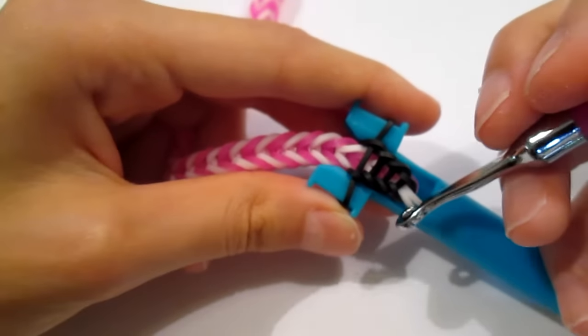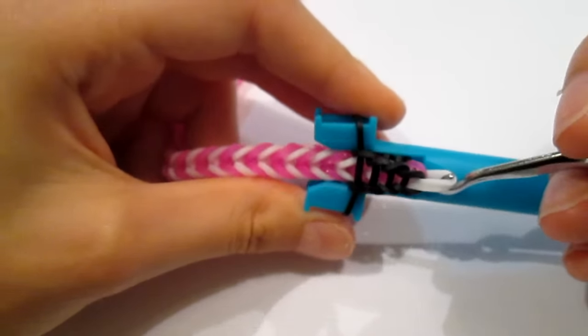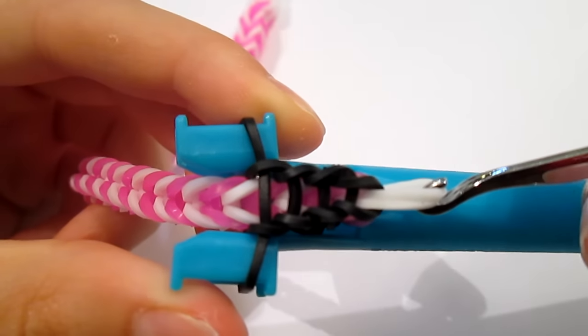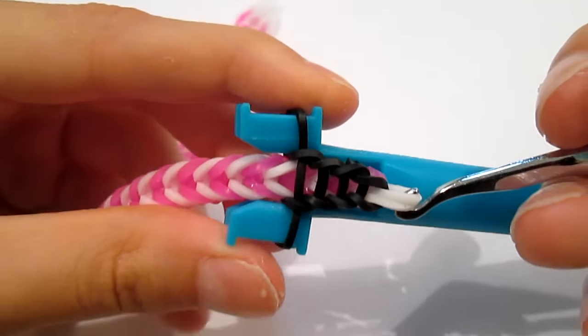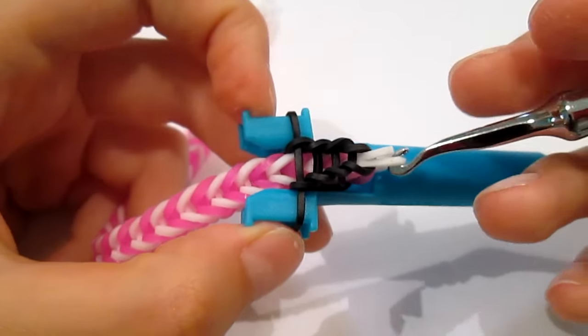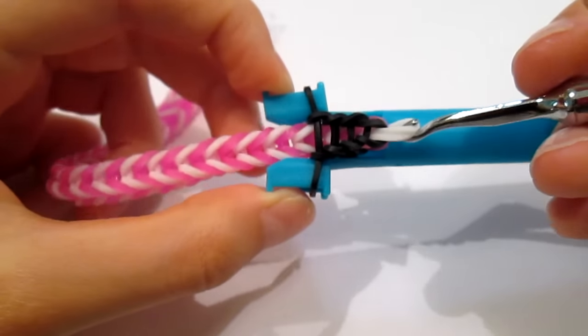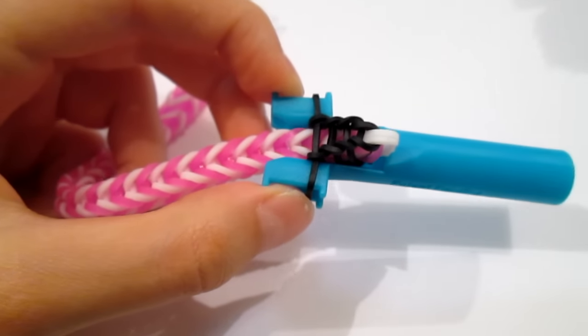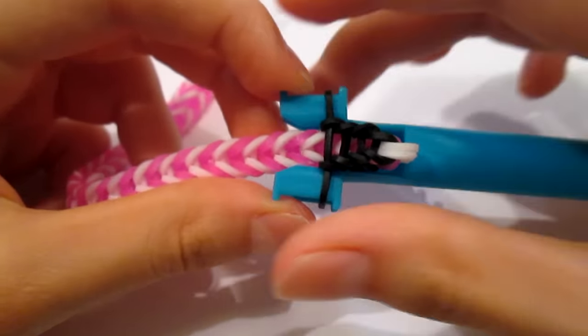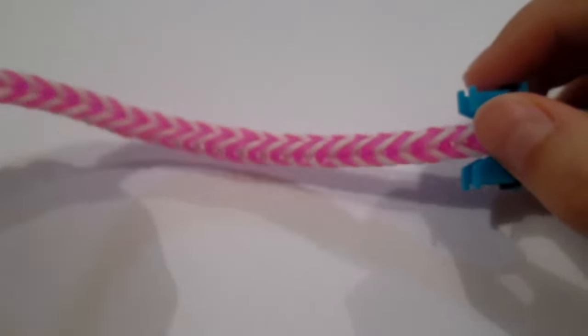So, it should look something like this so far. Now, it shouldn't be twisting. And if it does, I guess that's okay. But, if it's not twisting, it's perfectly fine. You're gonna twist it later after you finish your bracelet. Now, I'm going to do the rest off camera and then come back to show you how to finish your bracelet.